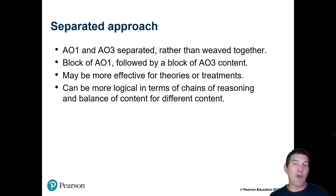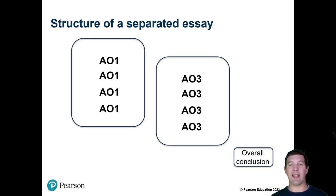It can be more logical in terms of chains of reasoning and balancing that, especially for the longer questions where you need to write more AO3 than you do AO1, so for 16 and 20 markers without context there are more marks for AO3. That's an important thing for students to be aware of and that might be easier with a separated approach for them to get that balance right. But for studies it might be more difficult for them to do that particularly the chains of reasoning where they're linking ideas together, so it might look something like this in terms of its overall structure.